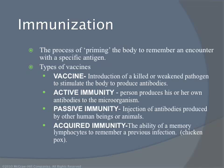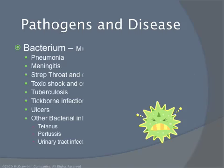Vaccination involves introducing a killed or weakened pathogen to stimulate the body to produce antibodies. Many of you have vaccinations for chicken pox, measles, mumps, rubella, and so on. Active immunity is when you have your own antibodies, either because you've had the disease or exposure to the microorganism. Passive immunity is the injection of antibodies produced by other human beings or animals. Acquired immunity is the ability of a memory lymphocyte to remember a previous infection.